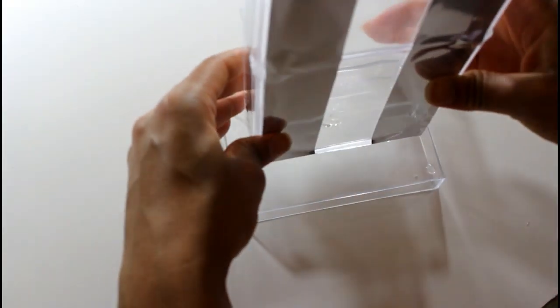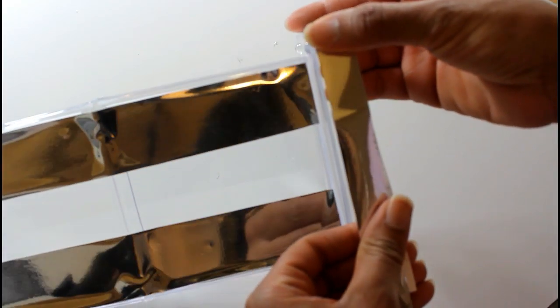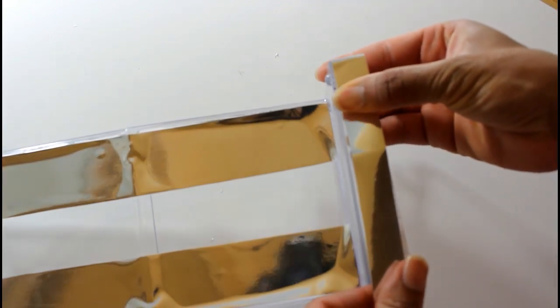Right here I'm just adding some glue so that I can add the base. And then to add just a little bit more decoration, I'm just going in with that same mirrored paper.